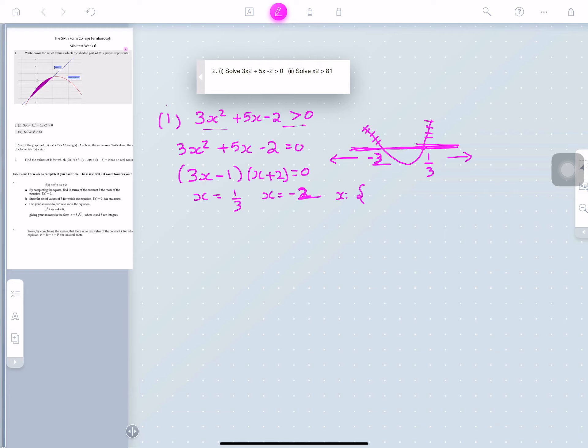So you write it as notation, x such that x is less than negative 2, or, which is that, x is greater than 1 over 3. So that is part 1. That's your answer for part 1.